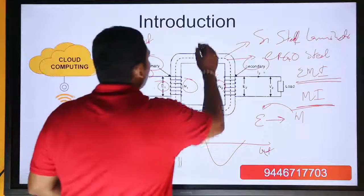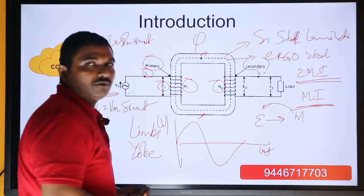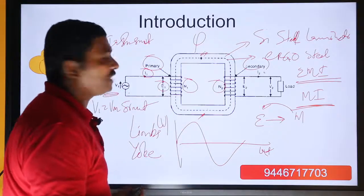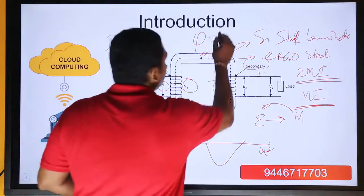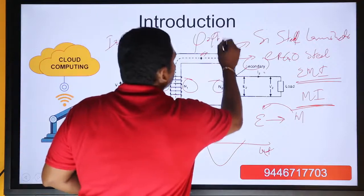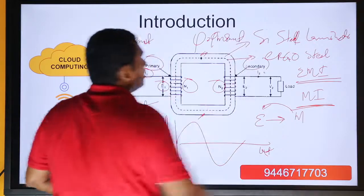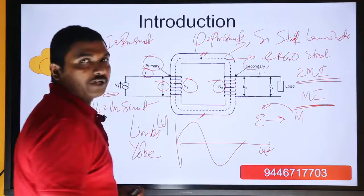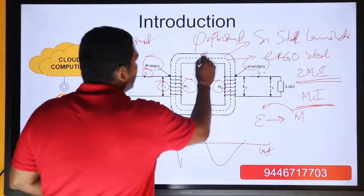When an electric field is applied, a magnetic field of magnitude Φ will be generated. Φ is equal to Φm sin(ωt). This will be the flux generated.